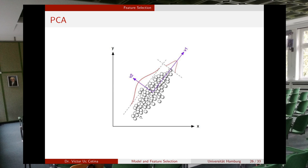The point is that while the algorithm can discover useful directions, you need to consider that if the original axes represented height and weight, v1 and v2 no longer represent anything directly connected to the real world. The coordinates in the new space are simply linear combinations of height and weight, so these new features don't have a real meaning in your problem.